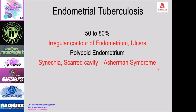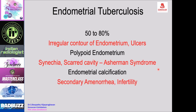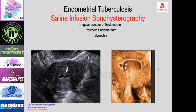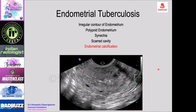Healing can lead to synechiae, scarred uterine cavity (Asherman syndrome), or rarely endometrial calcification. Saline infusion sonography in infertile patients shows thin distension of the uterine cavity with polypoid irregular endometrial contour and synechiae formation on 3D reconstruction. Extensive scarring may result in failure of distension of the uterine cavity. Tiny punctate endometrial calcifications may also be seen. These changes result in secondary amenorrhea and infertility.